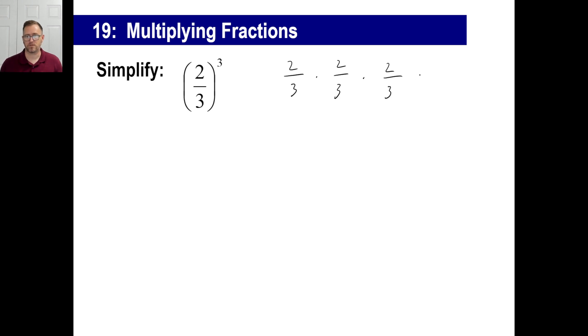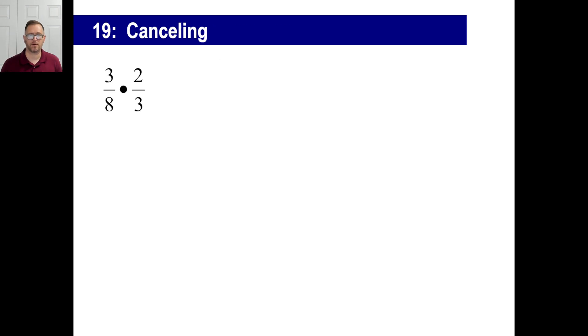Okay. So you do the same thing all the way across the top. Two times two times two, eight. Three times three times three, 27. That's your answer. There we go. You can't reduce that any because eight and 27 don't share any factors.